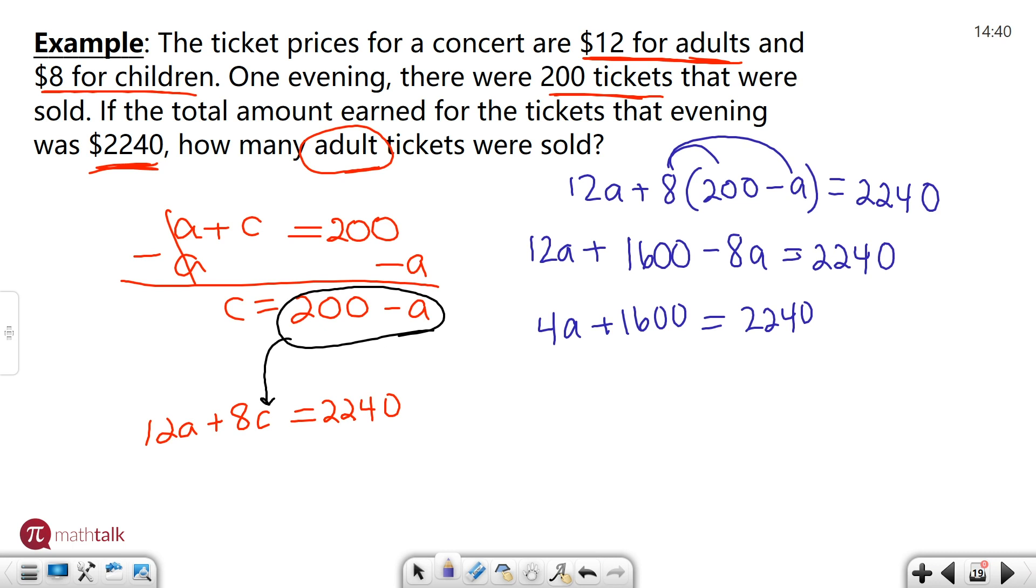I can subtract off my 1600 from both sides. That'll get me 4A equals 2240 minus 1600. You can type that in your calculator if you want. That's going to be 640. Now I just need to divide by 4. When I do that, I get A equals 160.